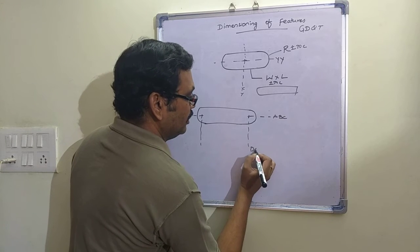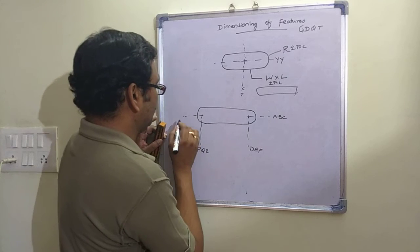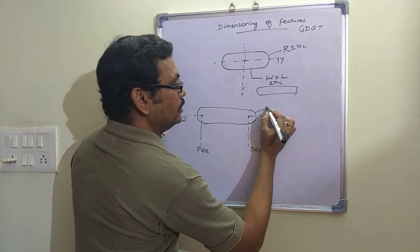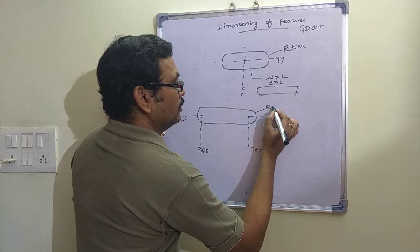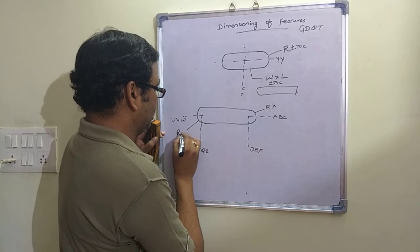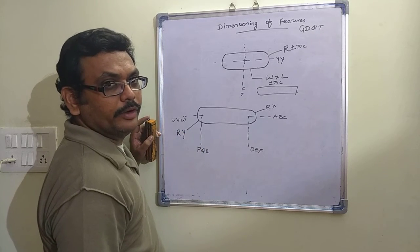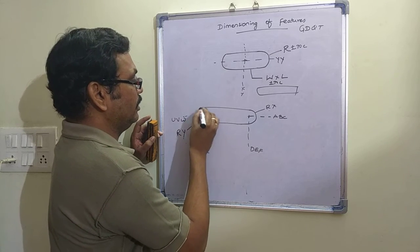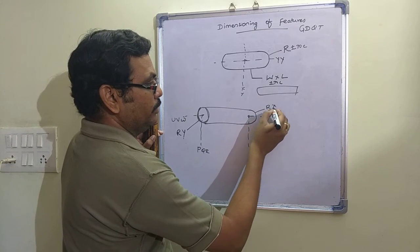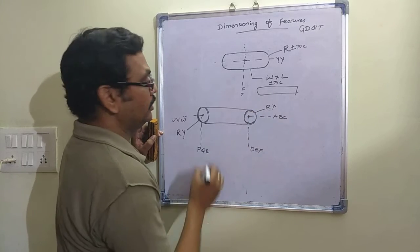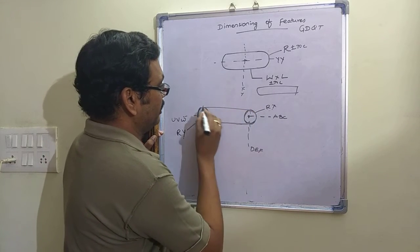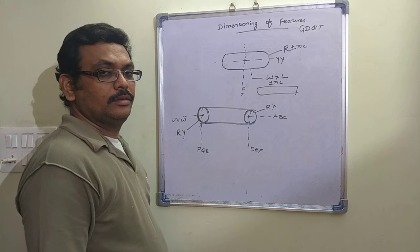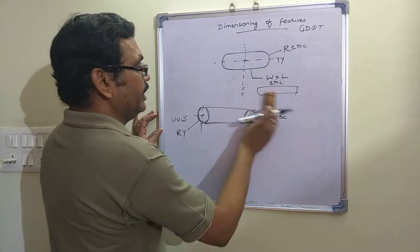The second method for defining a slot is to give individual dimensions A, B, C, D, E, F and so on, along with two radii — Rx and Ry. If I know one point and the radius, I draw a circle at that location. The tangent points of the circles are connected to form the slot profile. This is how a slot is defined using the second method.